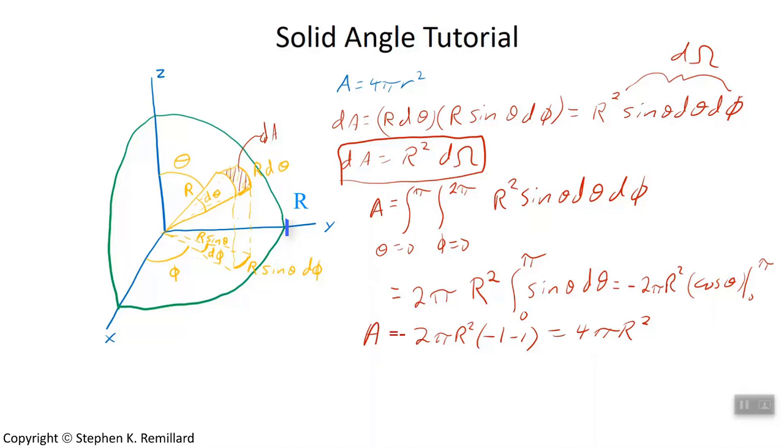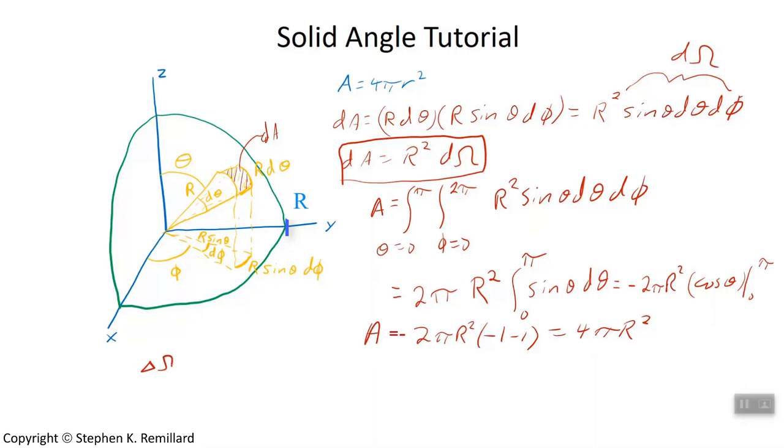But we'll call d omega the differential solid angle. If I wanted to get the complete solid angle, maybe call it delta omega. So as opposed to a differential d omega, delta omega is a larger sweep of solid angle. You can integrate from theta initial to theta final, whatever you're sweeping through, and the same for phi. And you'll have the solid angle that is subtended.